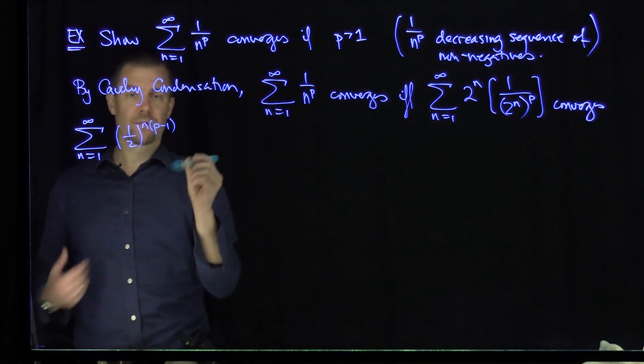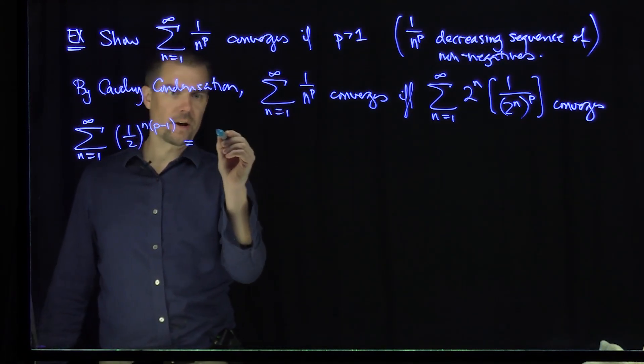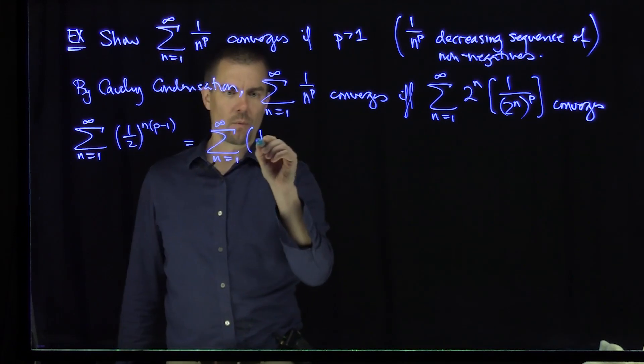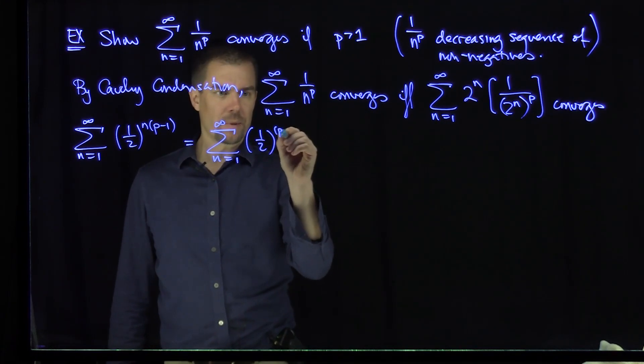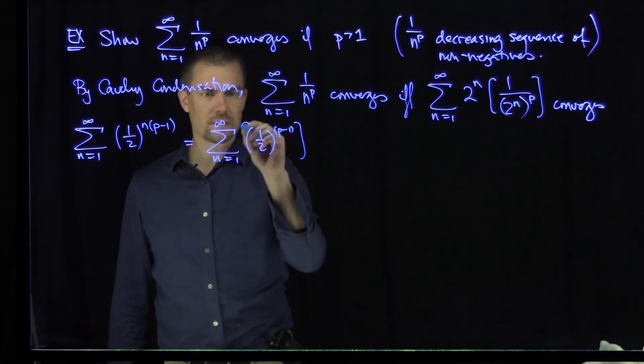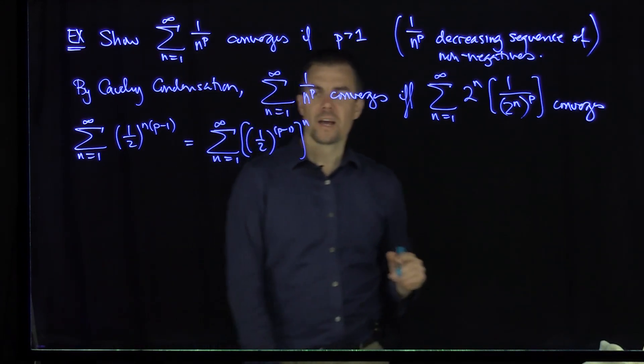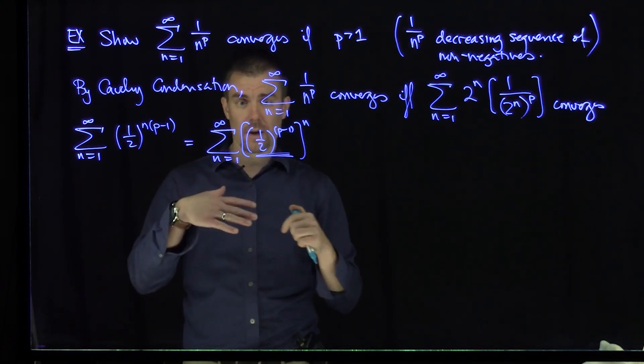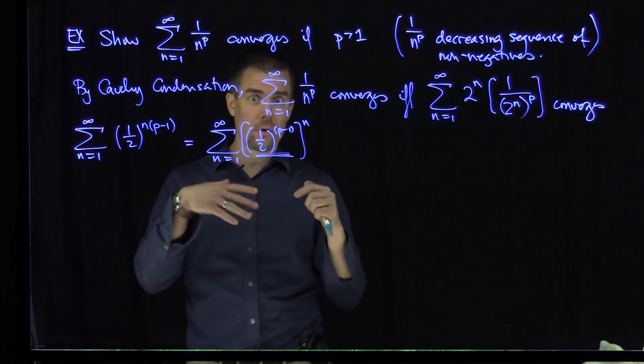Now I need this number so we can rewrite this in the following way. We can write this as the sum n goes from 1 to infinity of 1 half to the p minus 1 raised to the nth power. And we see that we want this number in the parentheses to be less than 1 in absolute value.